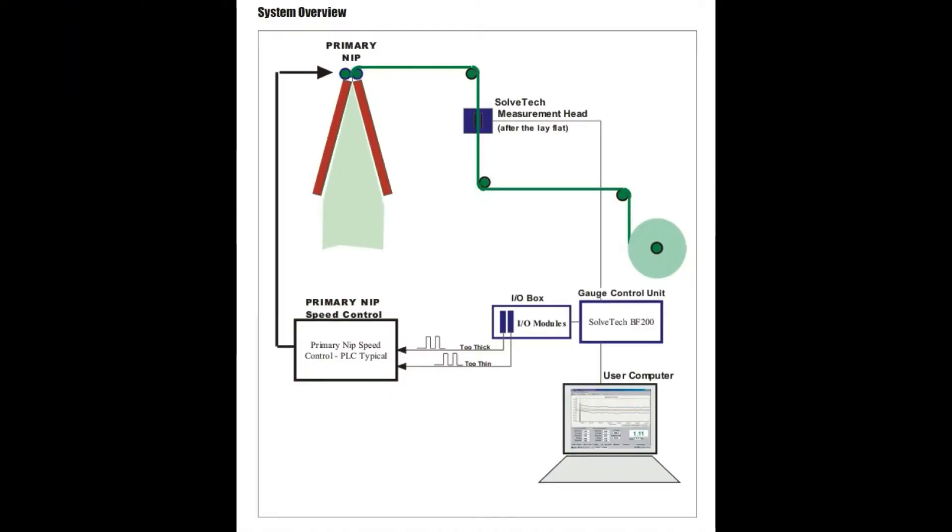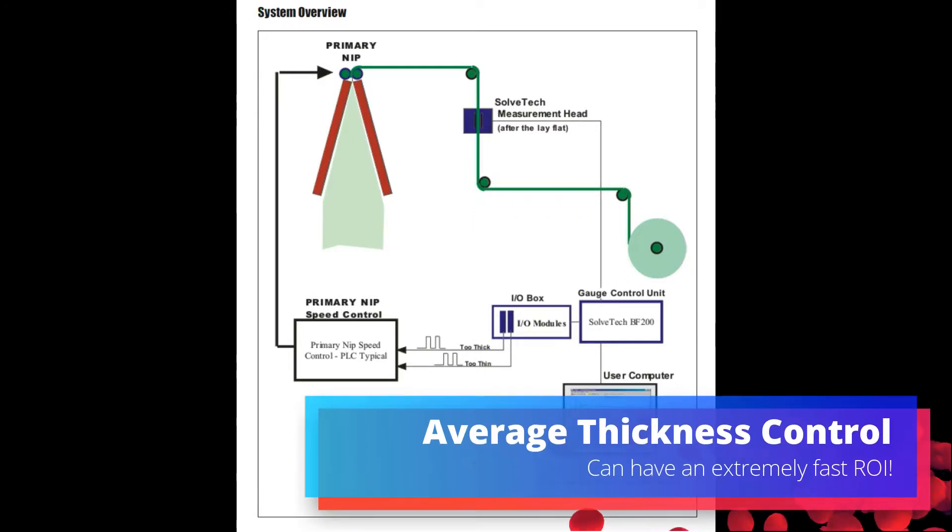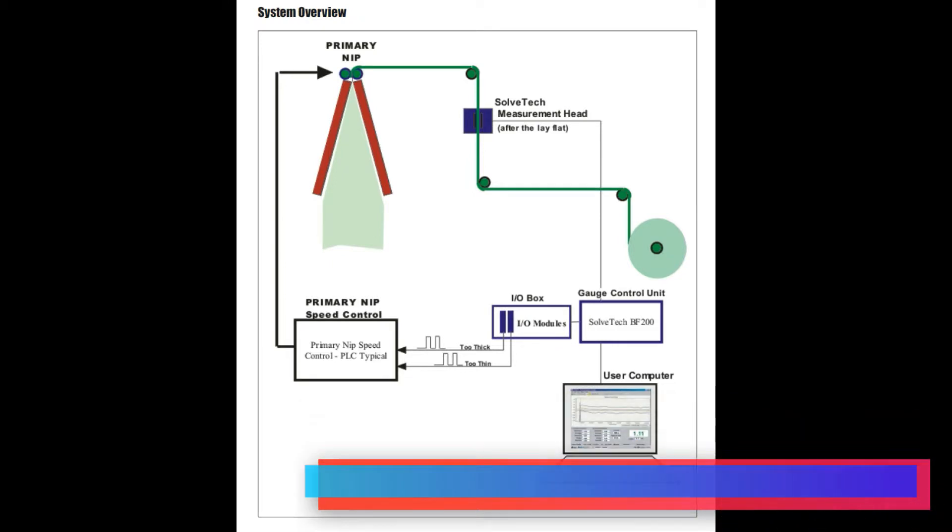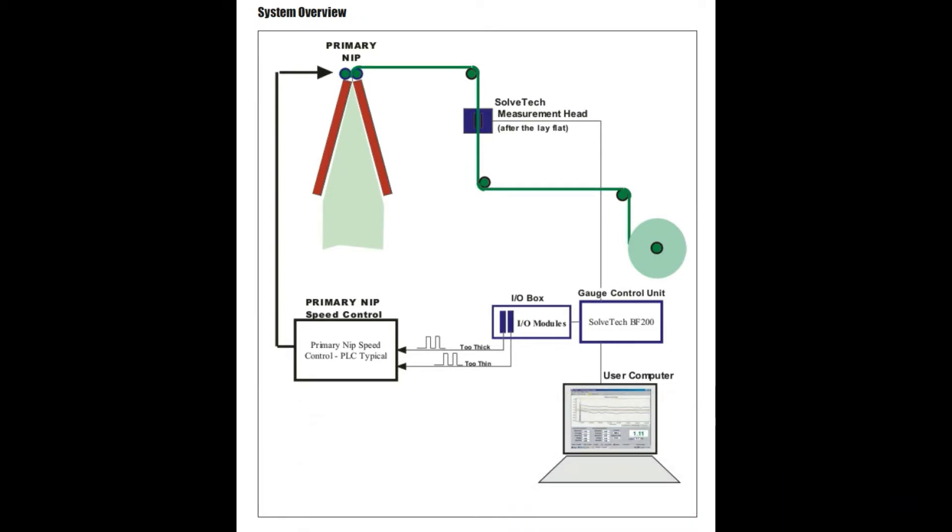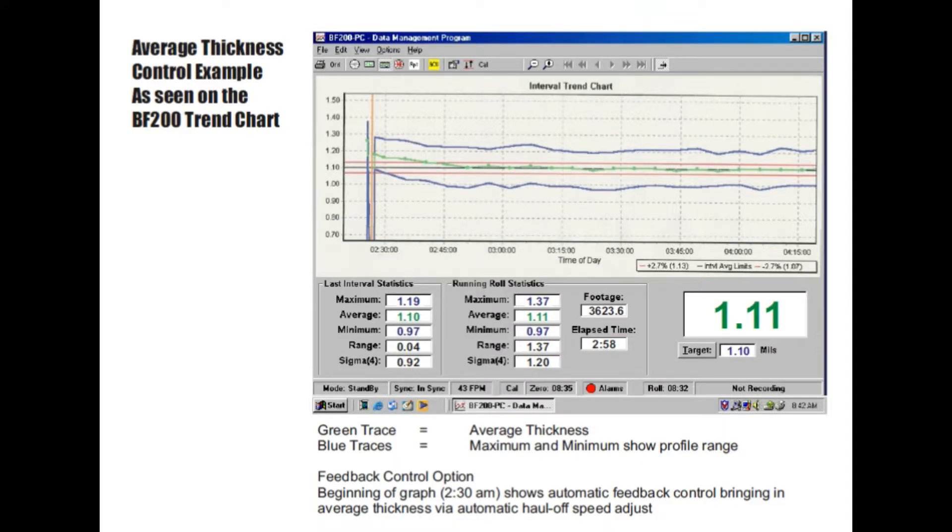Along with looking at the variability profile we can also control the average thickness of the blown film using our system. We can output whether it's too thick or too thin to the primary nip roller. And when that speed adjusts that can make the film thinner or thicker.